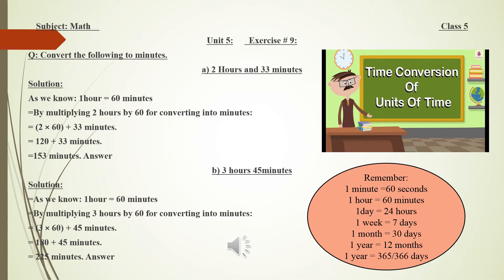Now come to part A: 2 hours and 33 minutes. As we know, one hour is equal to 60 minutes, so 2 hours is equal to 120 minutes. We also have 33 minutes given, so 120 plus 33 minutes gives us the answer: 153 minutes.